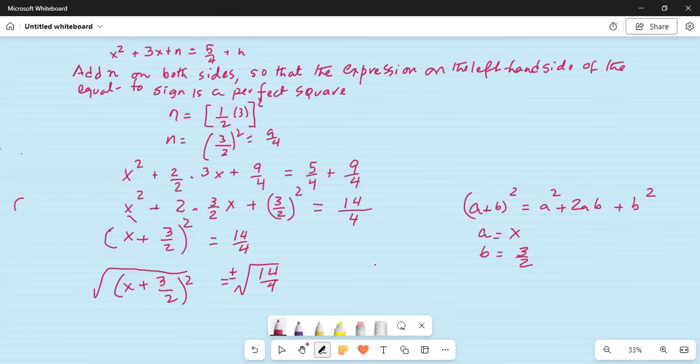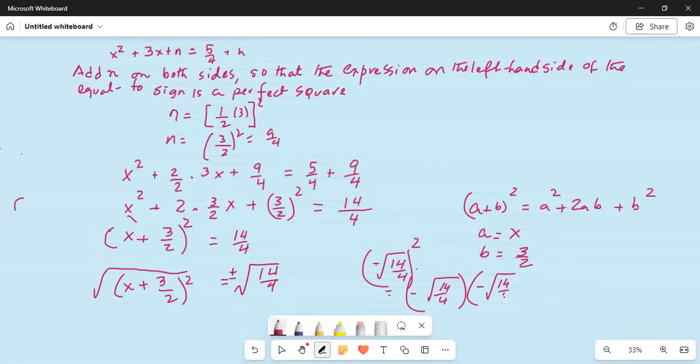Why plus and minus? Because if you have square root of 14 over 4, the minus part, and if you square it, it is equal to minus square root of 14 over 4 times minus square root of 14 over 4, which makes it 2 minuses cancel out, it is 14 square divided by 4 square inside the square root is 14 over 4. So therefore a minus sign is also a possibility.